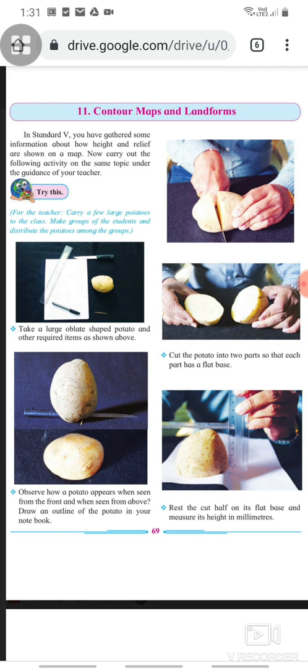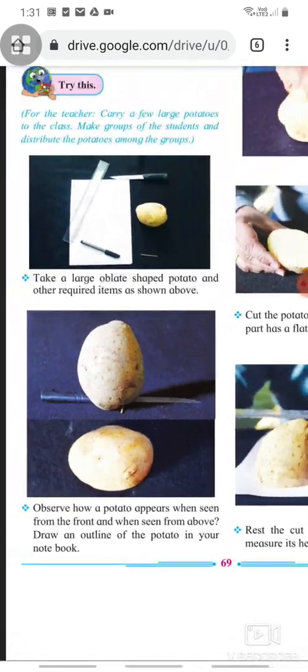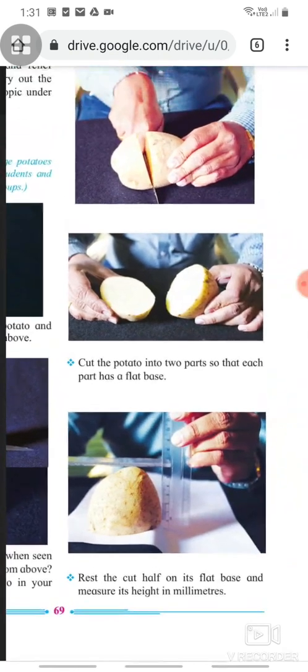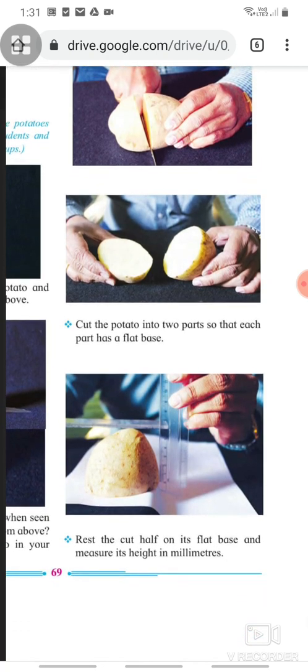Observe how a potato appears when seen from the front and when seen from above. Draw an outline of the potato in your notebook. Now, cut the potato into two parts so that each part has a flat base. Rest the cut half on its flat base and measure its height in millimeters.